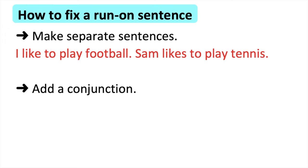The next way is to add a conjunction. A coordinating conjunction is used to join two independent clauses. Examples of conjunctions include for, and, nor, but, or, yet, so.